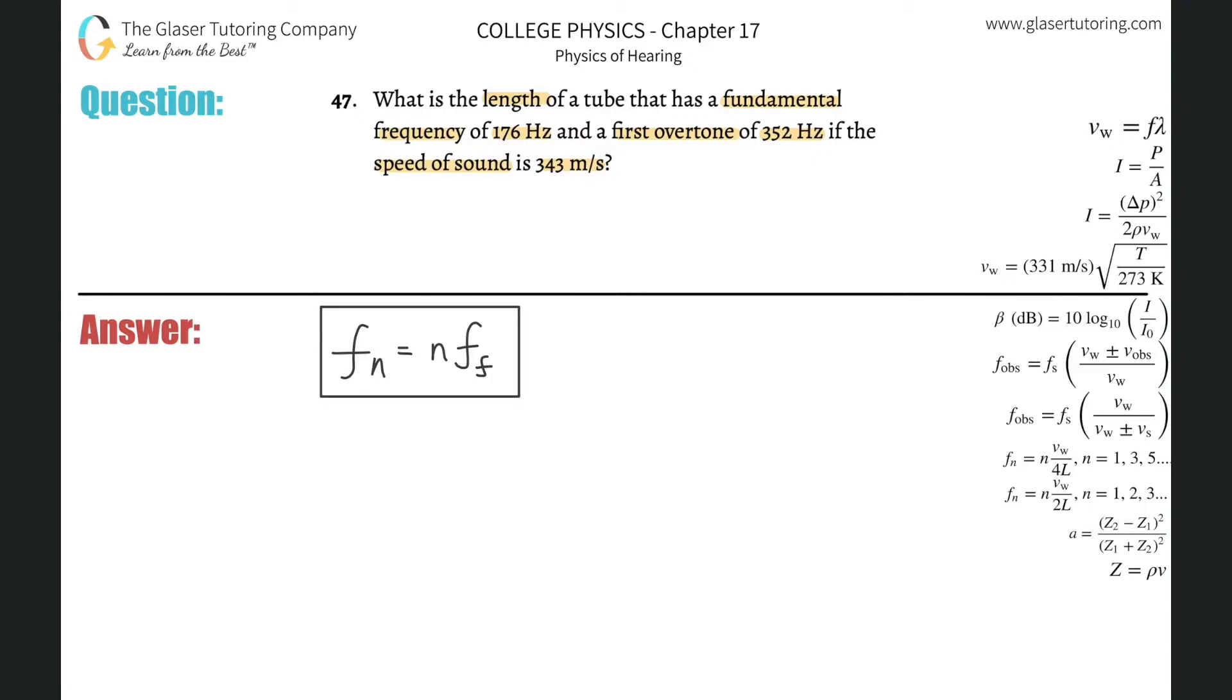So now, this is basically what we need. And what's interesting about this problem is that, did they tell us what type of tube we're dealing with? Is it a tube that's open at one end or both ends? No, they didn't. So that's going to be a problem because I have two different formulas to use, one for a tube open at one end and one for a tube open at both ends.